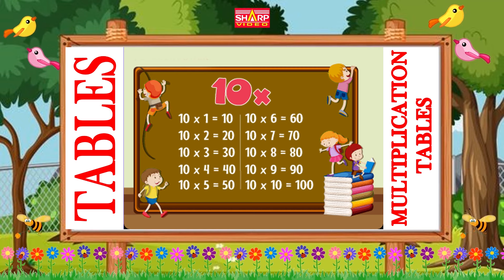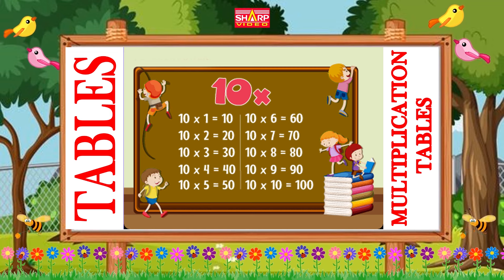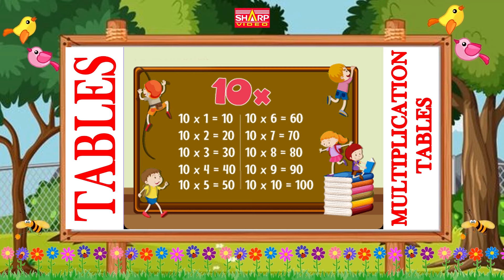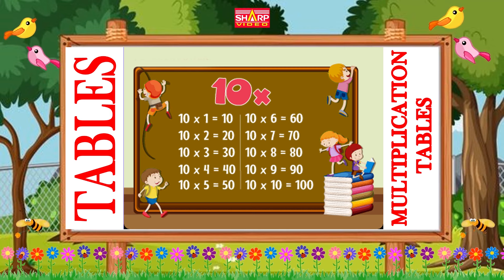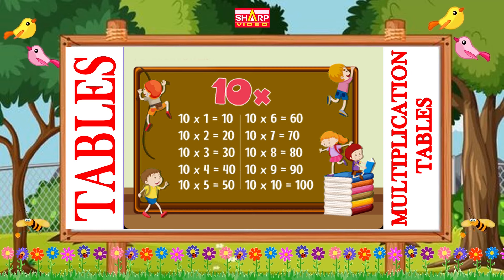Ten fives are fifty, ten sixes are sixty, ten sevens are seventy, ten eights are eighty, ten nines are ninety, ten tens are hundred.